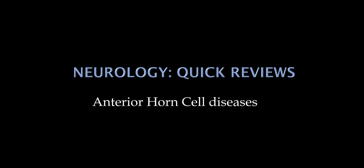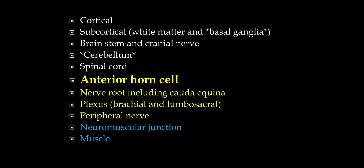Our next topic is anterior horn cell diseases, which is a rather small one, so this will be short. Remember that we are going through the neuroaxis, starting from the bottom up. These are all lower motor neuron conditions.